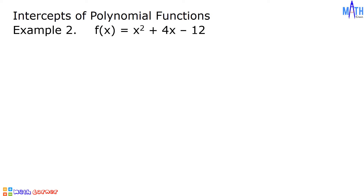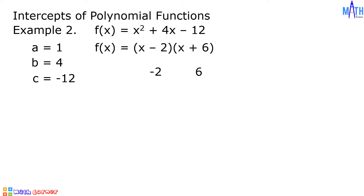Example number 2: f of x equals x squared plus 4x minus 12. Since the given function is not written in factored form, let us first express this in factored form. The given function is a quadratic function where a is equal to 1, b is equal to 4, and c is negative 12. Since a is equal to 1, let us find factors of negative 12 that when added equal 4. The factors are negative 2 and positive 6, since negative 2 plus 6 is equal to 4. So f of x equals quantity x minus 2 times quantity x plus 6.